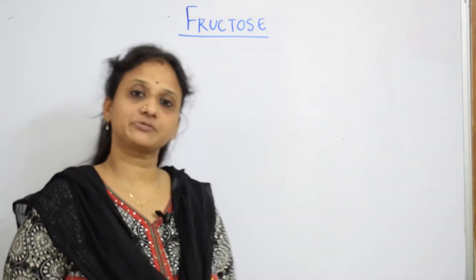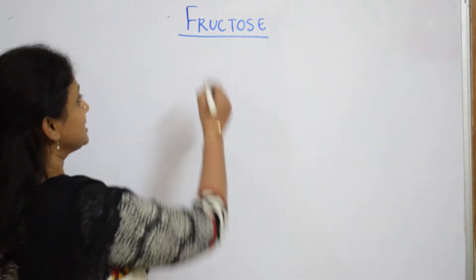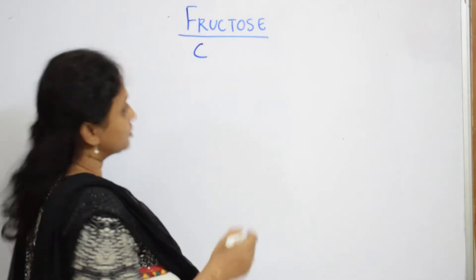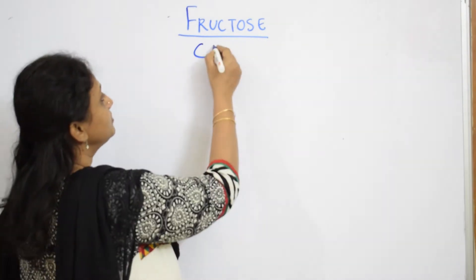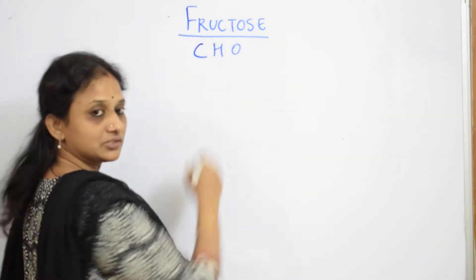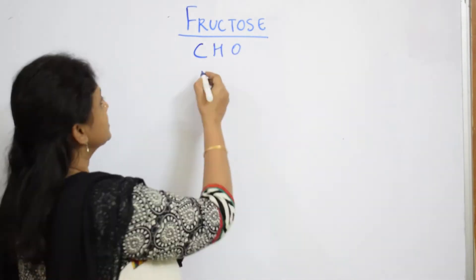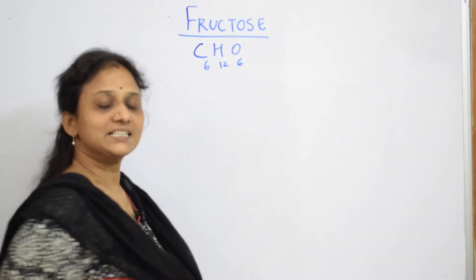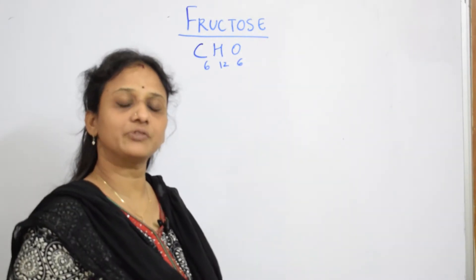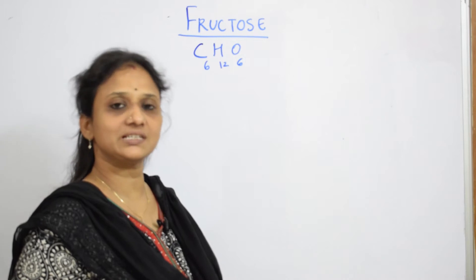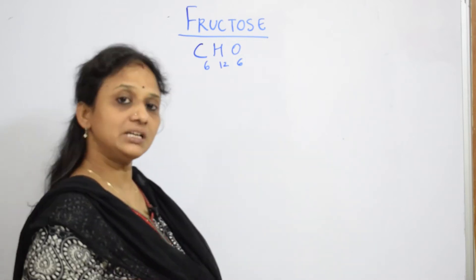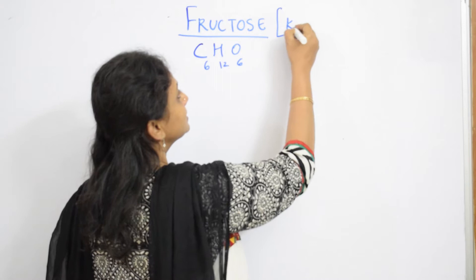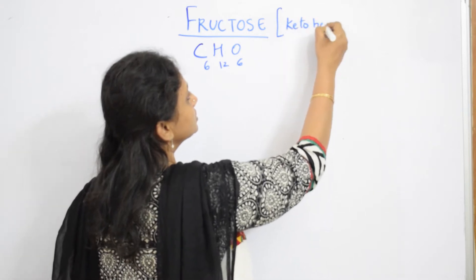When I speak about fructose, the formula for fructose is — as we said, it is a biomolecule, it is a combination of carbon, hydrogen and oxygen. It is the same C6H12O6, just like glucose. The formula for fructose also is C6H12O6, but the only difference is fructose is called as ketohexose.